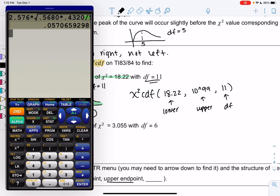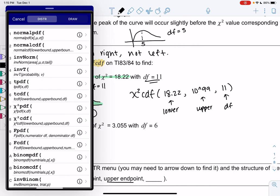So it's going to be in that same menu as before. We're going to go to second distribution, same menu where normal and T were, and chi-square CDF might be a different number, but it should be around 8, depending on your calculator.